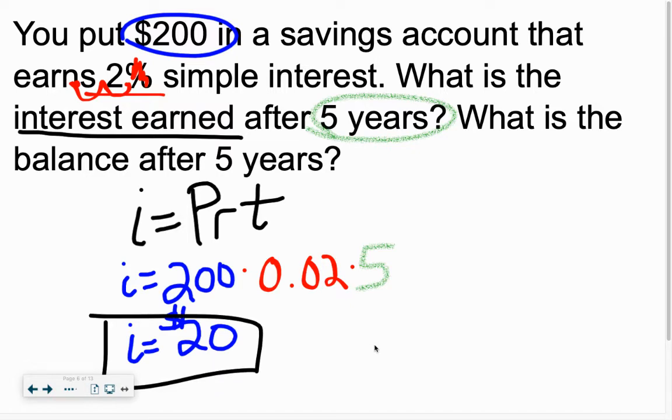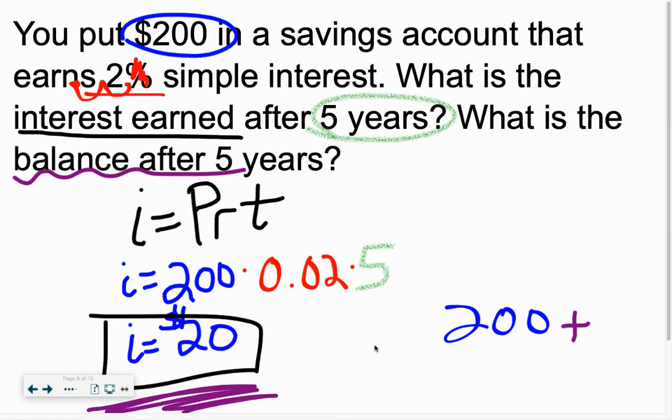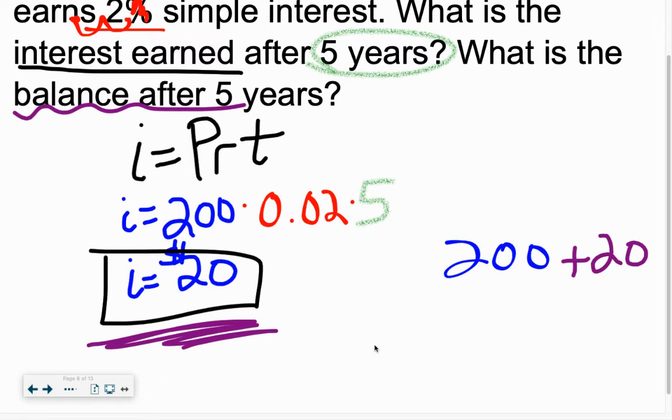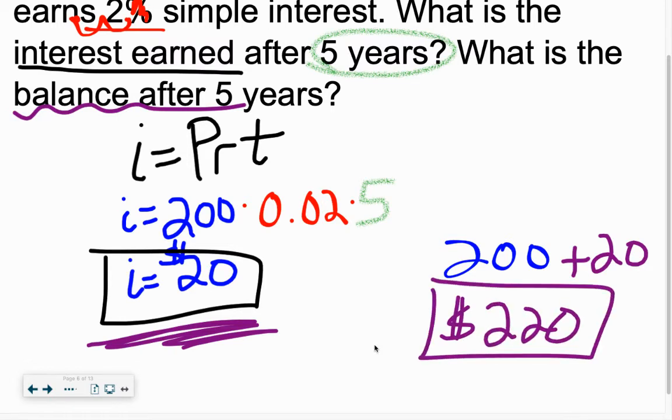Now it says, what is the balance after five years? After five years, you go to the bank and you say, I want all my money back. So you start first with the principal. How much money did you start with? You had that $200. Plus, how much interest did we just earn and figure out over here with our friend IPERT? 20. So the total balance is $220. You will walk away with $220 after five years because you got $20 in free money.